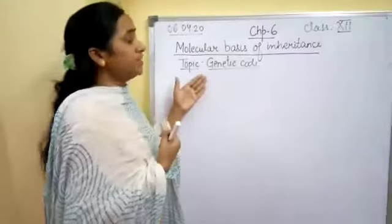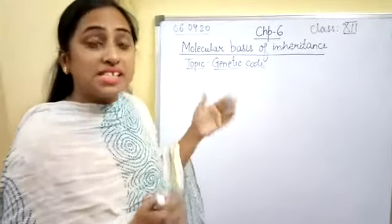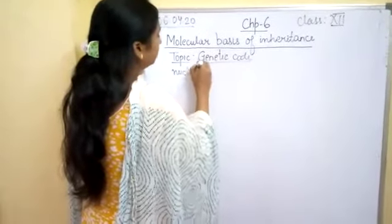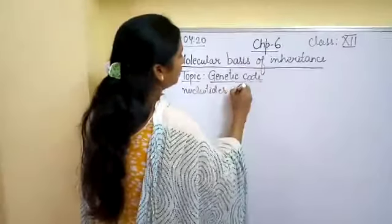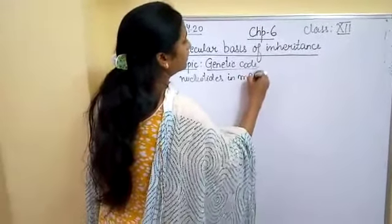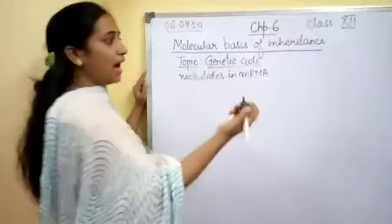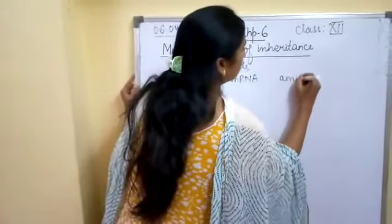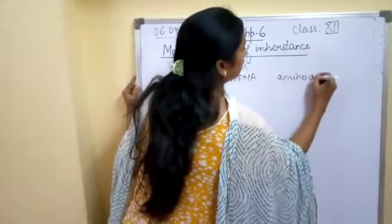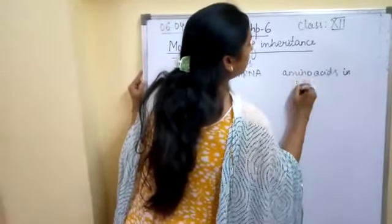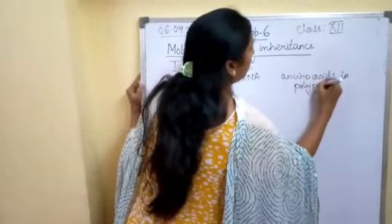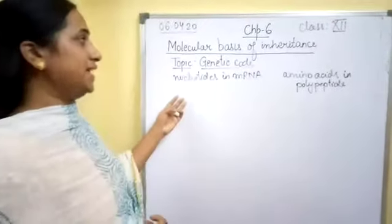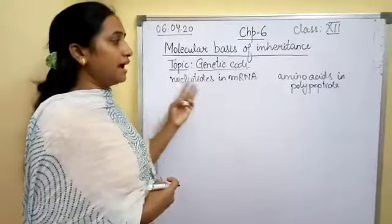So what do we mean by genetic code? Genetic code is the relationship between the nucleotides in the mRNA and the sequence of amino acids in the polypeptide chain. So genetic code is the relationship between these two entities: the nucleotides in the mRNA and amino acids in the polypeptide.